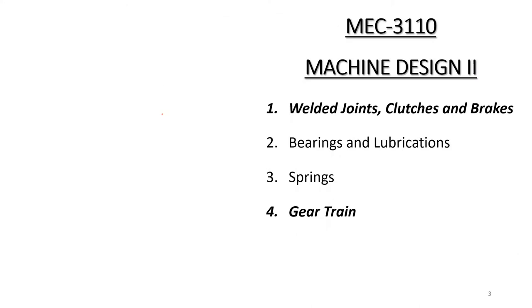This complete course is divided into four different units. The first one is welded joints, clutches and brakes. The second one is bearings and lubrication. The third one is springs, and the last one is gear train. The first and last units — welded joints, clutches and brakes, and gear train — will be taken by me, while bearings and lubrication and springs will be taken by Professor Noshad Alam.